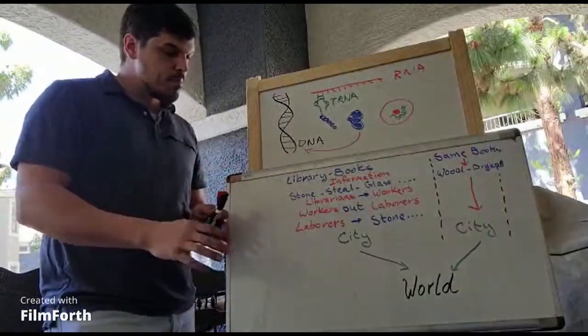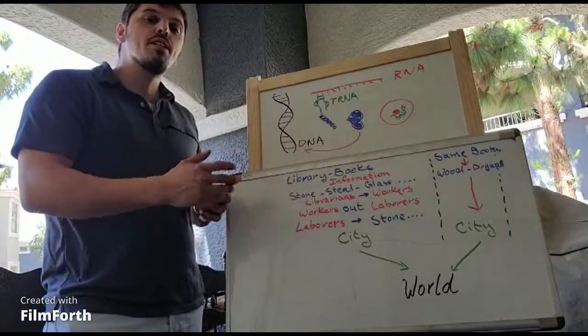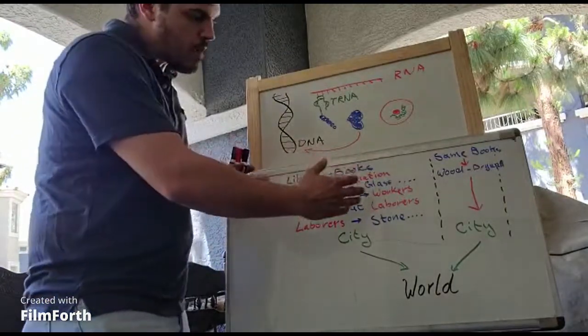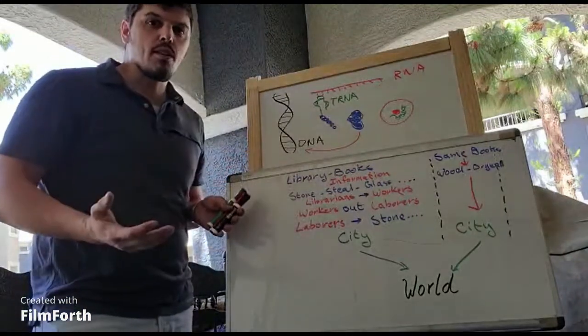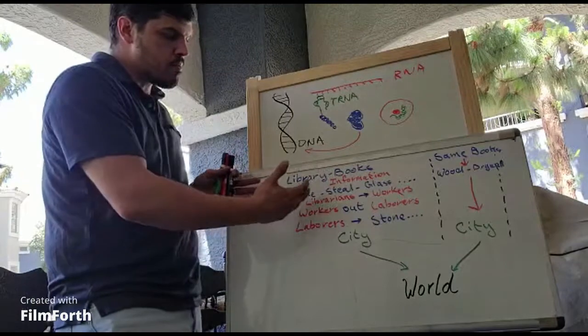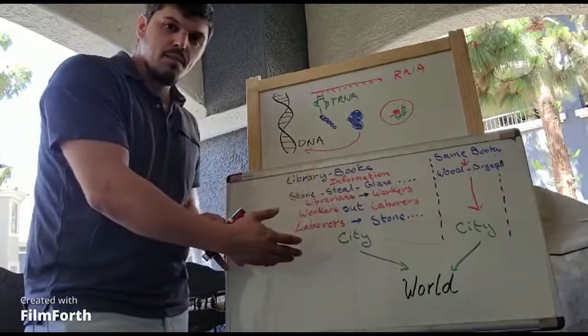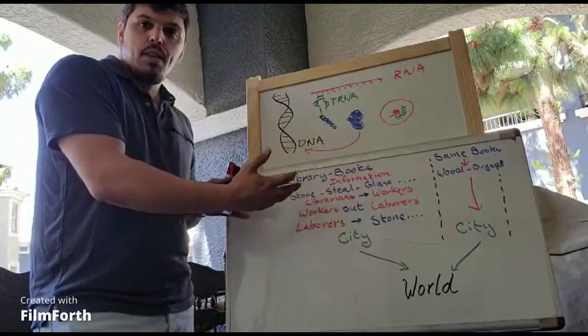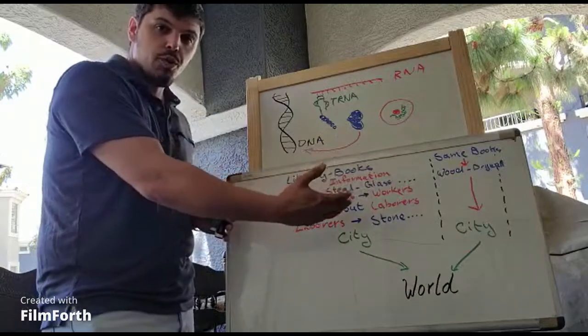Let's say that we've got a library. The library's got books. Books have information, and in that library, the information that we have is on how to construct something, you know, on how to build stone, steel, glass, and so on. Now, in that library, there's librarians. Those librarians, they take that information, they copy it, and then they give it to workers.